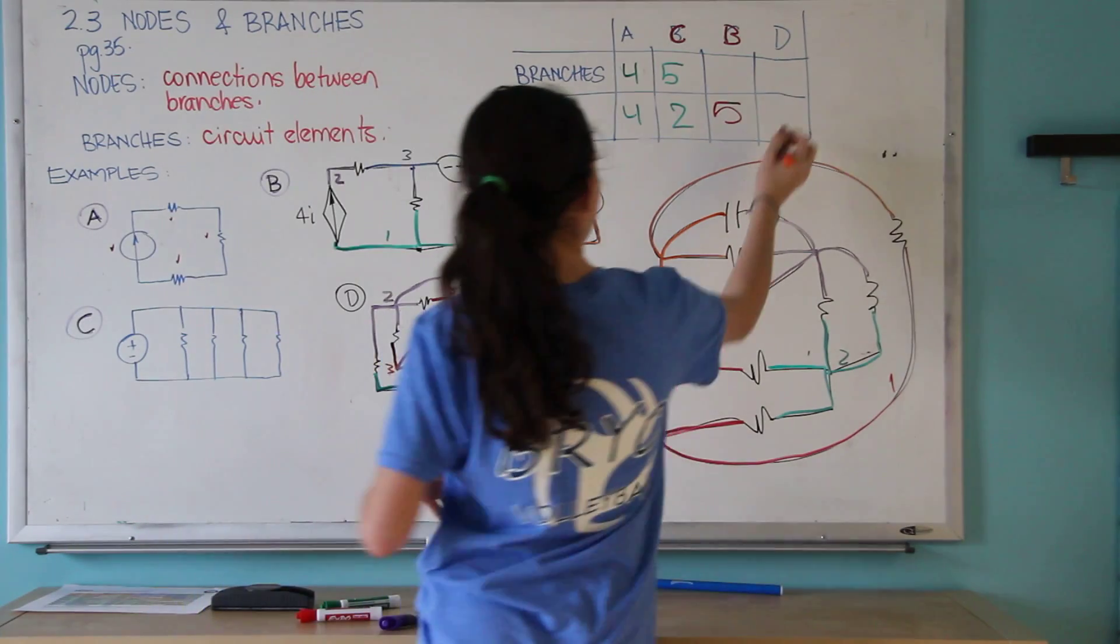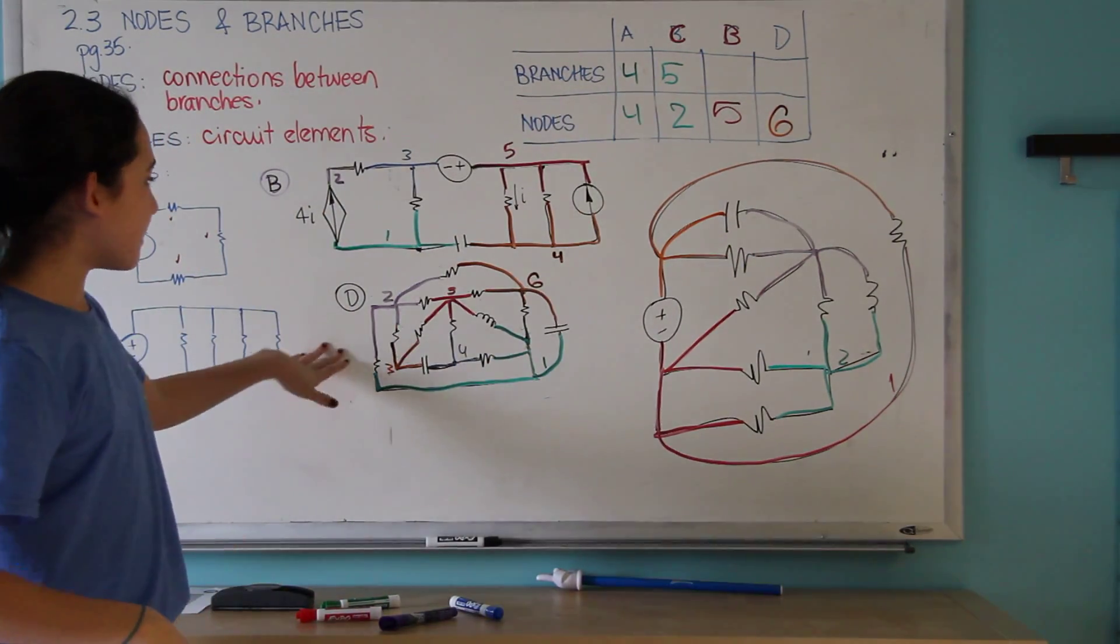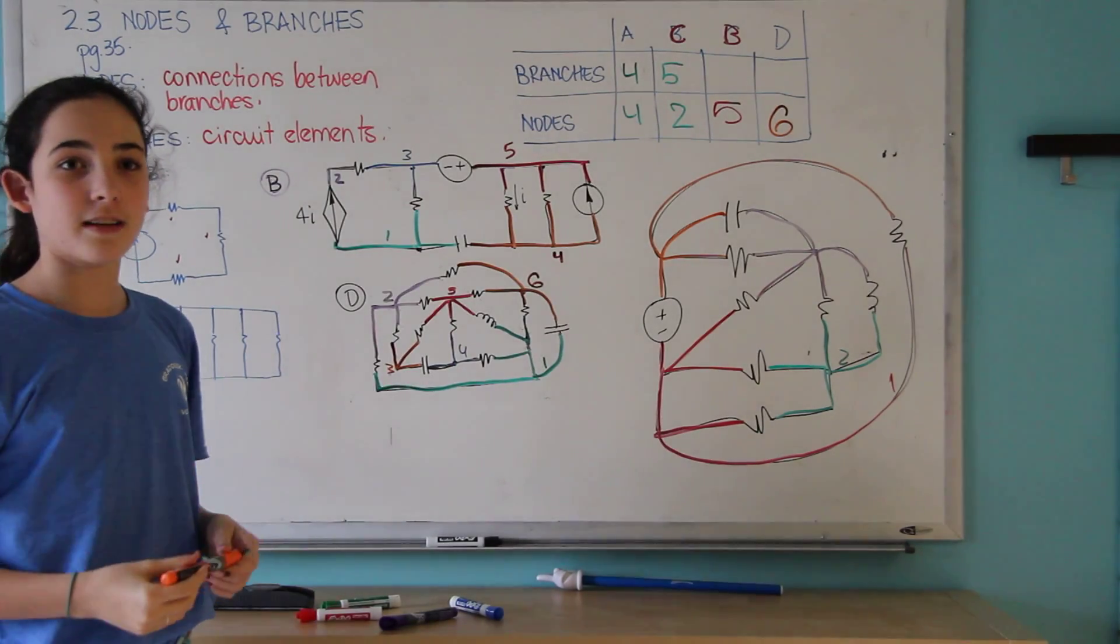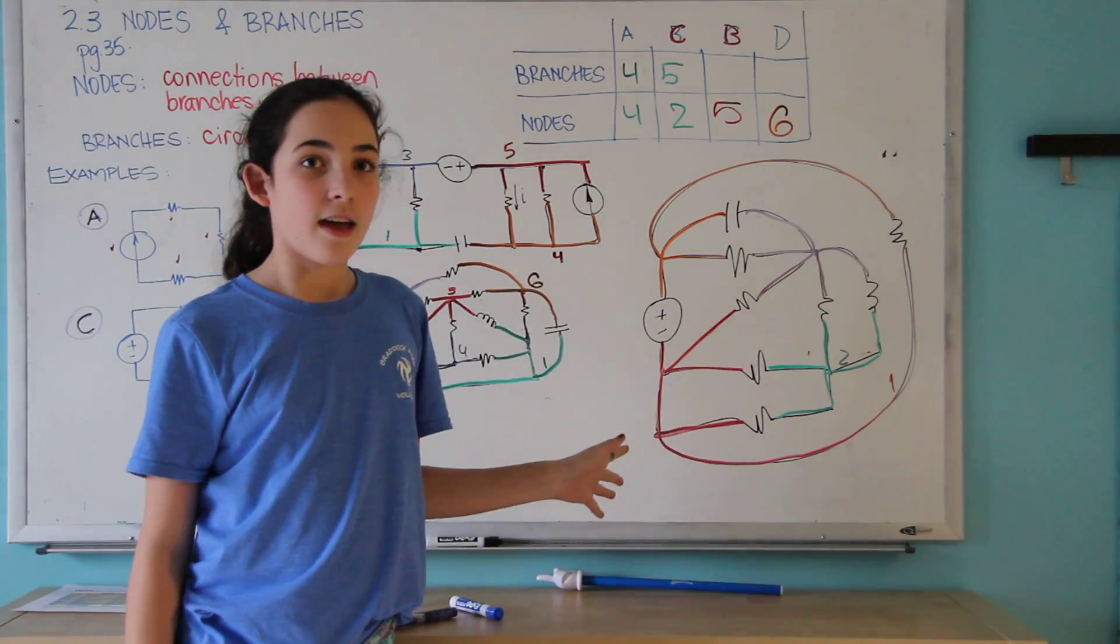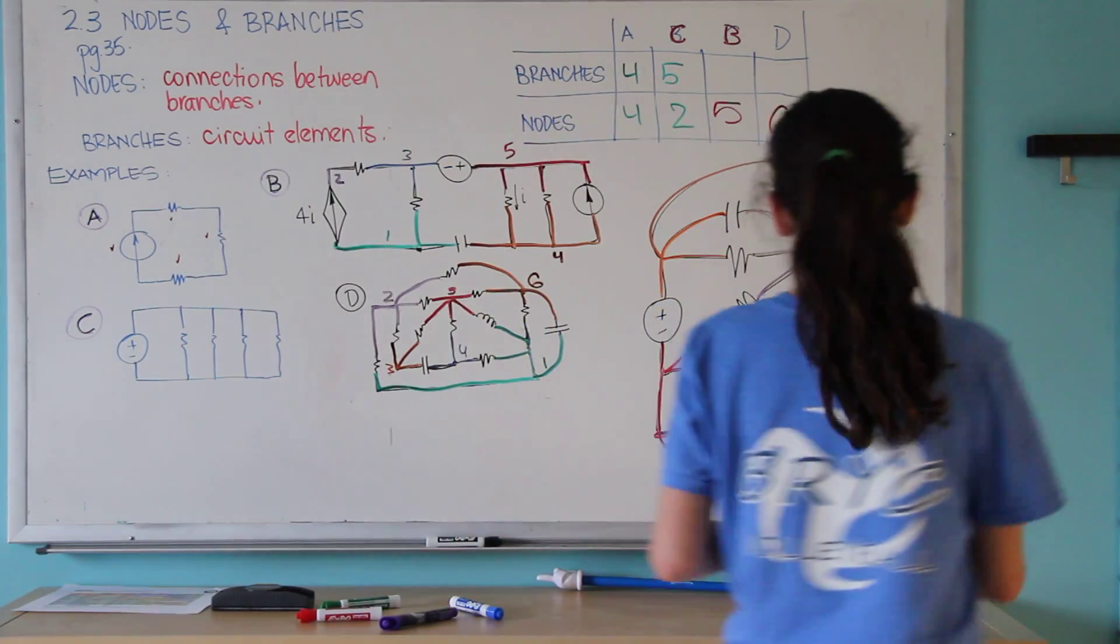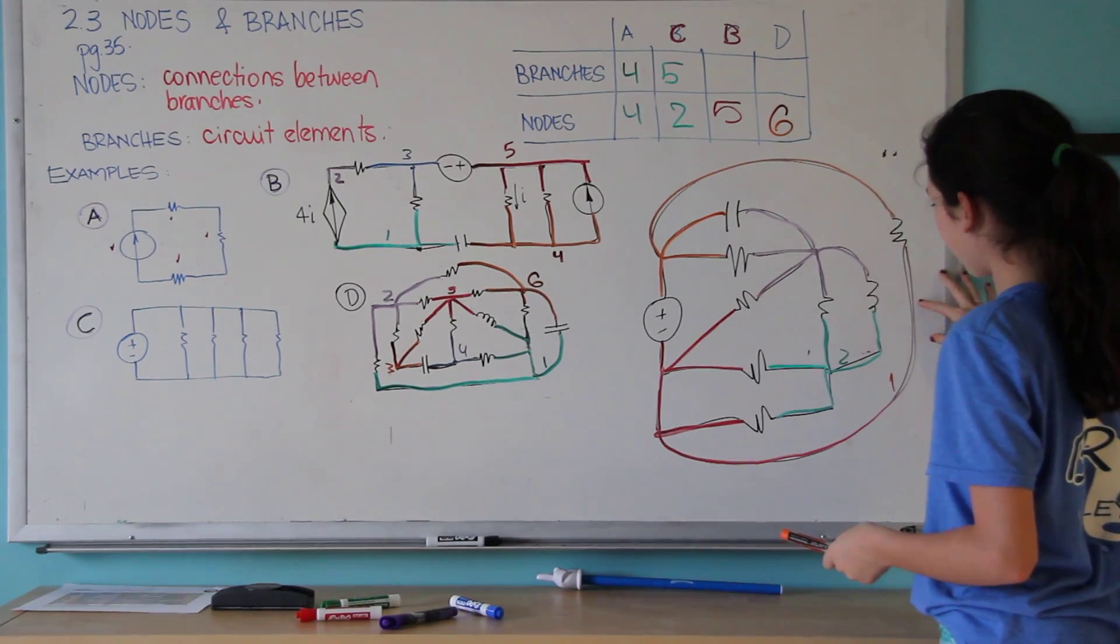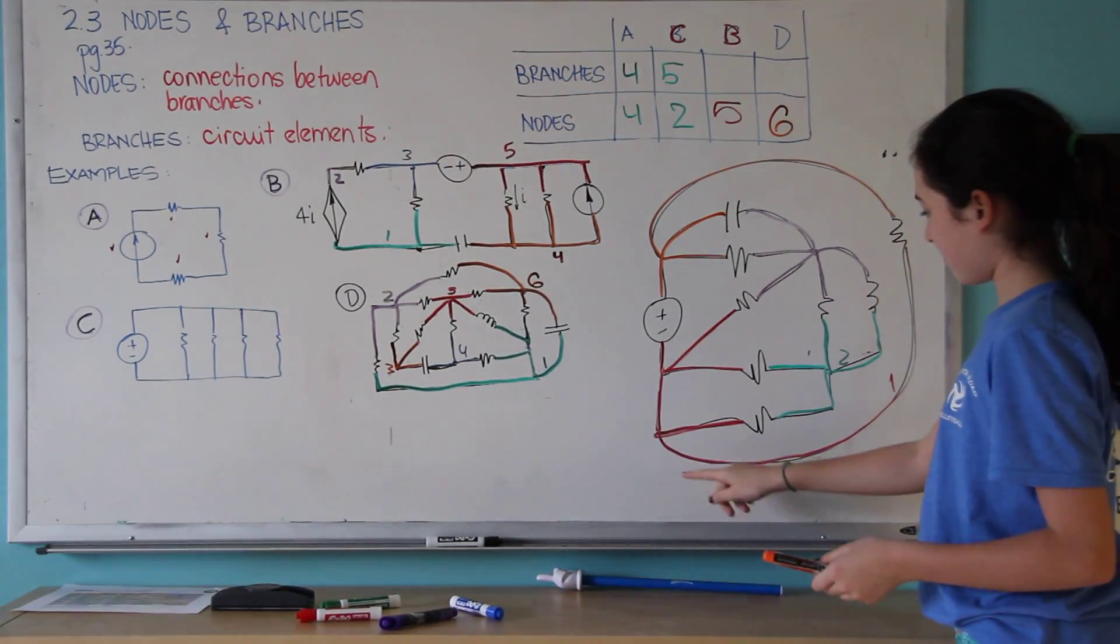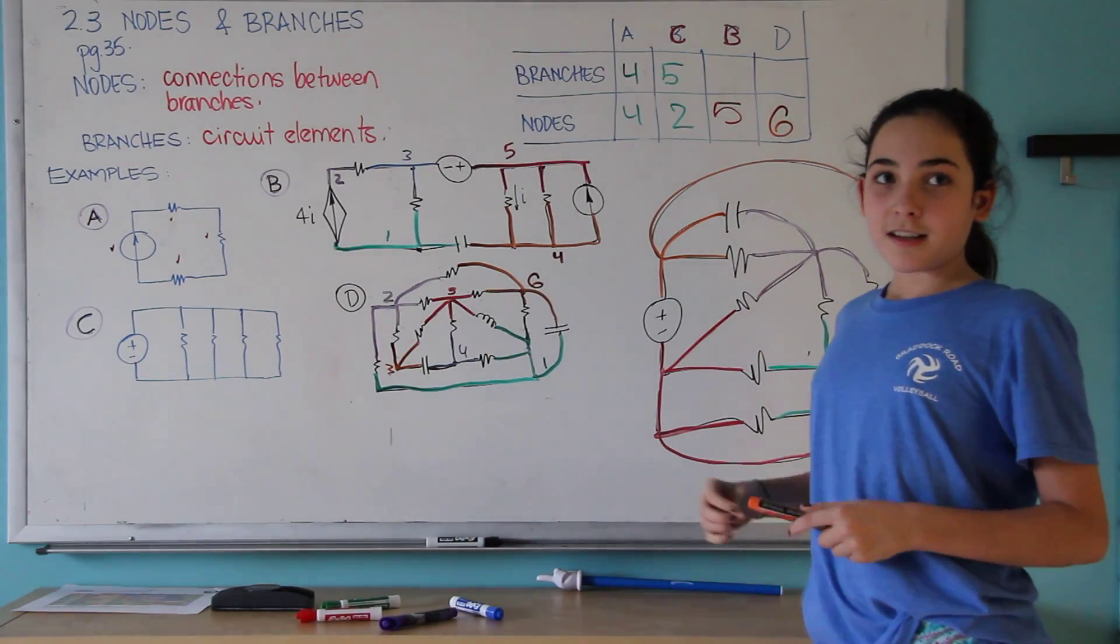So now we know that D has six nodes. And as you can see here, that's how you find nodes. Also, there's another circuit over here that I've already color-coded. And it just kind of shows the same concept that you keep numbering and coloring. And that's all.